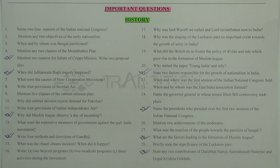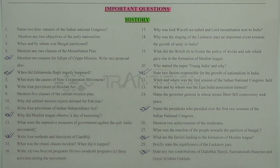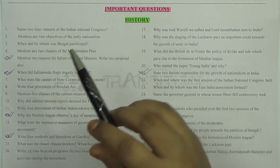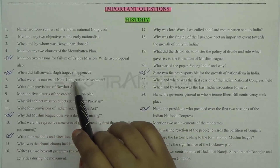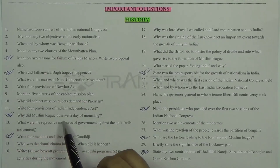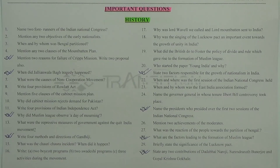Now let's talk about important questions of History. I have already listed out 30 history questions, and I have tick-marked the ones that are most important. Key highlighted questions include: Question 5 — mention 2 reasons for the failure of the Cripps Mission and write 2 proposals; Question 6 — when did the Jallianwala Bagh tragedy happen; Question 12 — why did the Muslim League observe a Day of Mourning. Write these answers to the point — do not illustrate excessively or write your own story, as history cannot be changed.